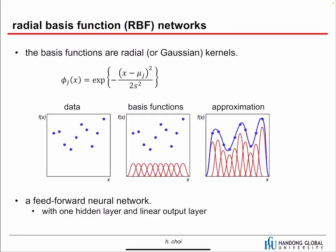Let's talk about radial basis function networks. This is a linear regression with radial basis functions — the basis functions are radial or Gaussian kernels. Given the data, we have lots of basis functions, and the approximation is based on the weight of some of these basis functions.